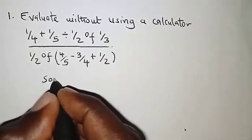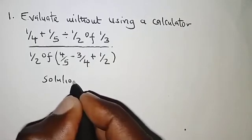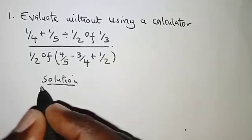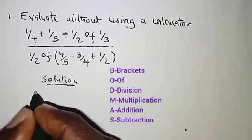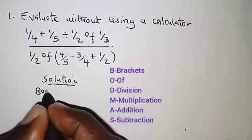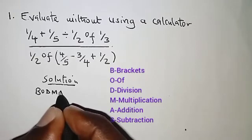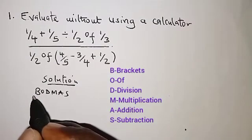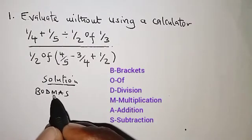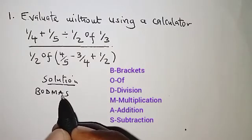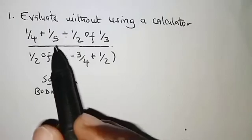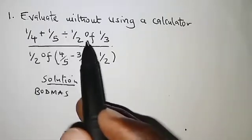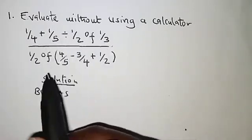BODMAS is just an order of operations: brackets, of, division, multiplication, addition, and subtraction. That order has to be followed whenever we have mixed operations like this case.